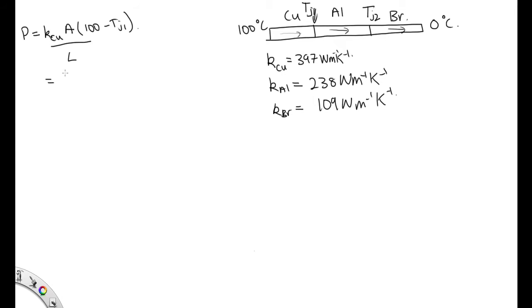This is equal to the heat flow through the aluminum. And the hot side is TJ1, the cold side is TJ2. And then this is also equal to the heat flow through the brass. The hot side is TJ2, and the cold side is 0.